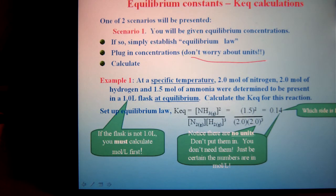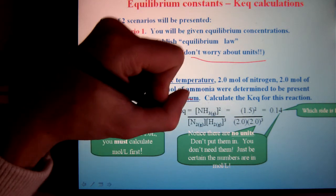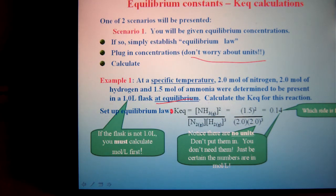So in this example, we say at a certain temperature, we added two moles of nitrogen, two of hydrogen, and one and a half ammonia. It says that's at equilibrium. So right away, I'm at equilibrium. I set up my equilibrium law. Do that first. And I plug in my values. And I get my final answer, 0.14. And since it's less than one, that means the reactants are favored.